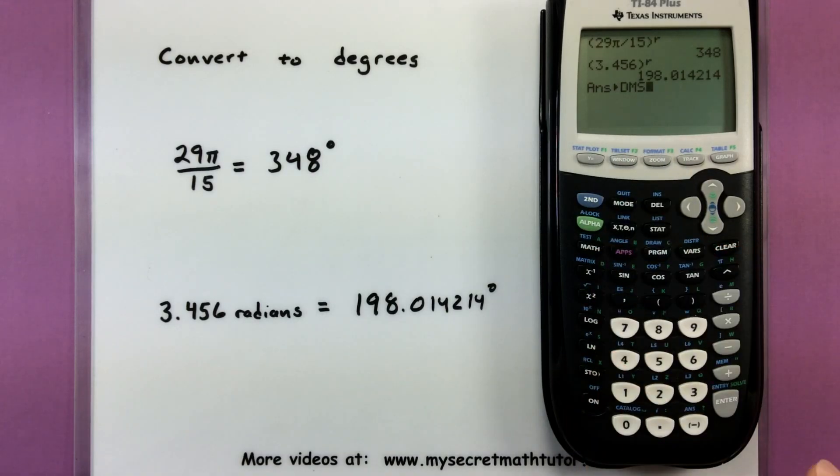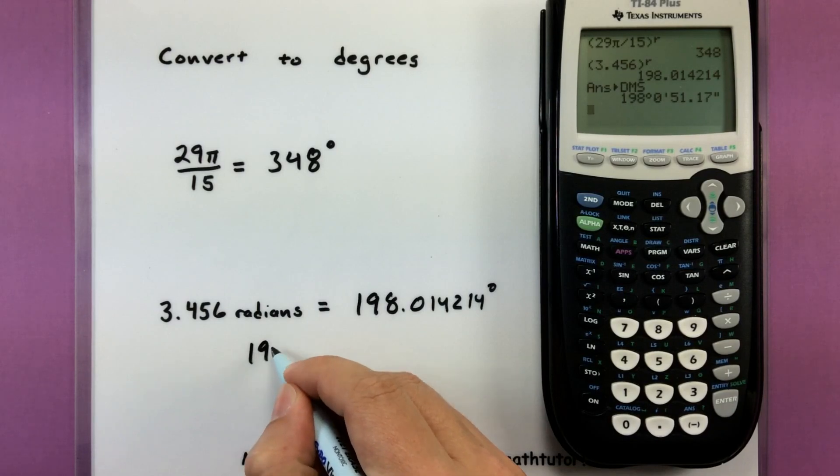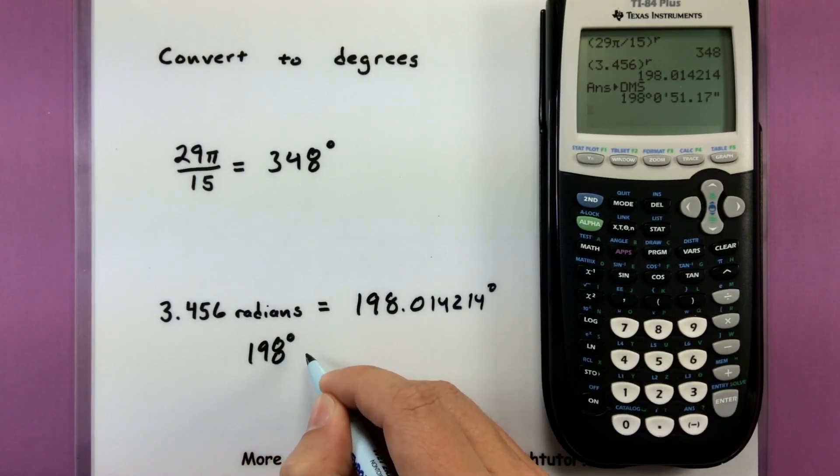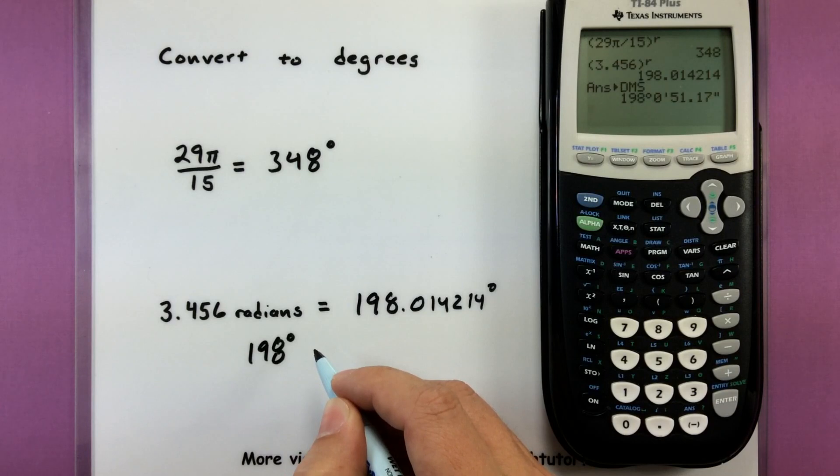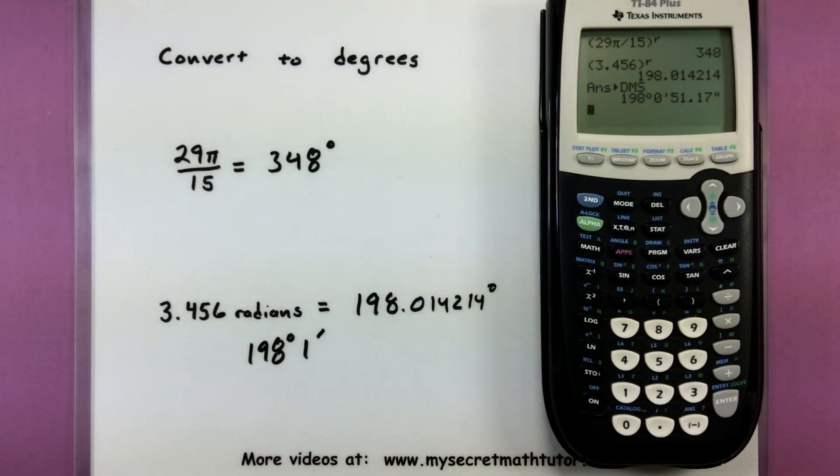There we go. So I'm going to take the answer I got before, convert it. And now I have my degrees, minutes, and seconds. So 198 degrees, zero minutes and 51.17 seconds. And let's just round that to be about one minute. Not bad.